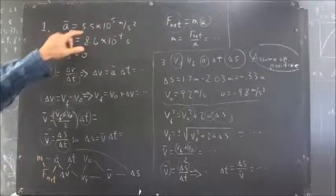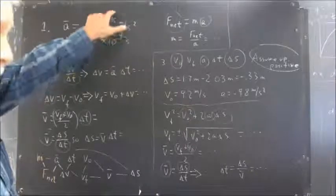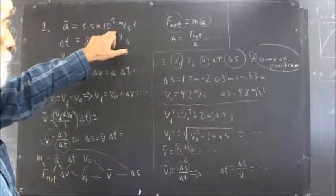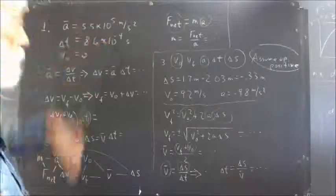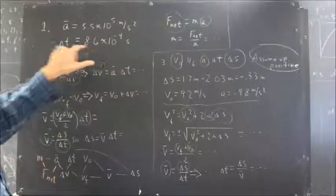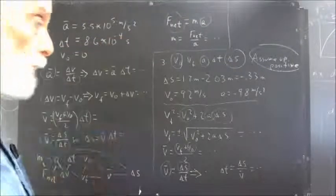The first problem tells us that a bullet has an average acceleration equal to 5.5 times 10 to the 5th meters per second squared, which is pretty close to 10,000 times the acceleration of gravity, and accelerates down the barrel of a gun in 8.6 times 10 to the negative 4th seconds.